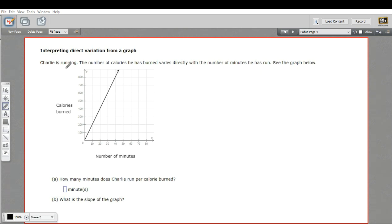In this case, it says Charlie is running, and the number of calories he has burned varies directly with the number of minutes he has run. Well, that makes sense. The more minutes he runs, the more calories he burns.